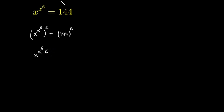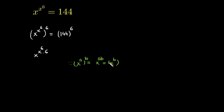Because we know the law of exponents: if x raised to the power a raised to the power b, this can be written as x raised to the power a times b, or further as x raised to the power b raised to the power a. So this is equal to 144 raised to the power 6.